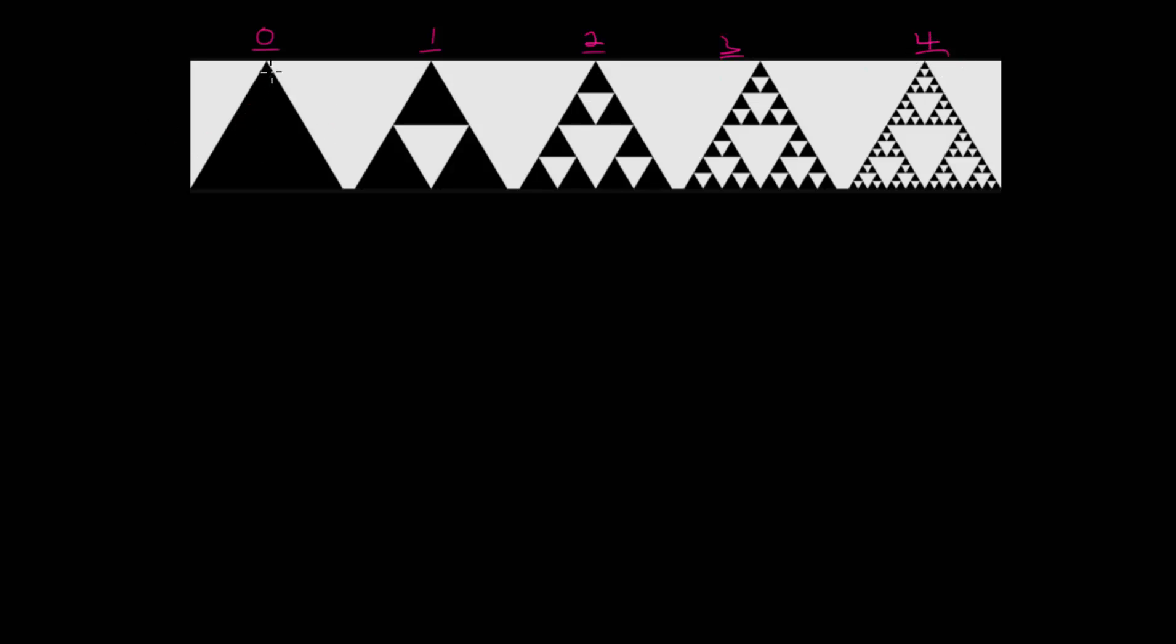But again, we're going to take each side length, find the midpoint, and from there we will connect each of these midpoints together with a line. And notice now we have four equilateral triangles where we will remove that middle one. And that will give us step one.